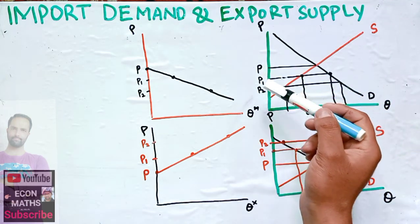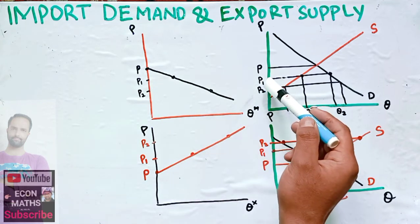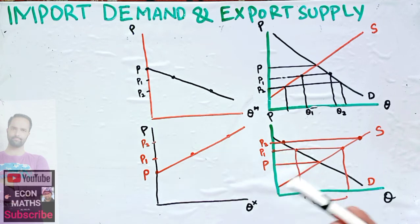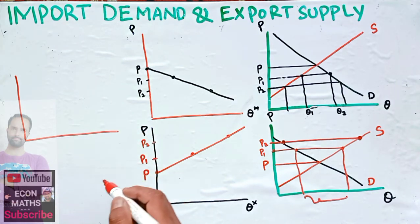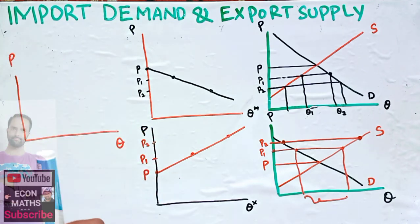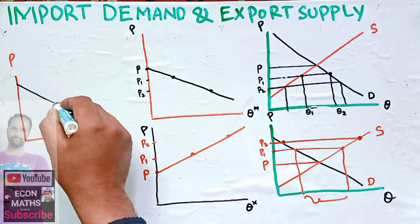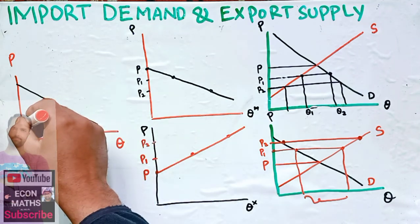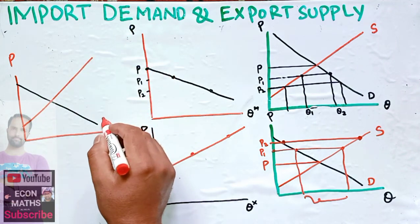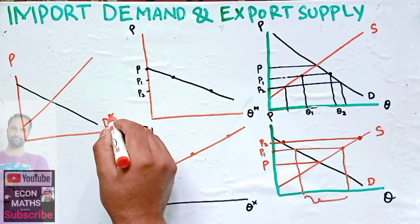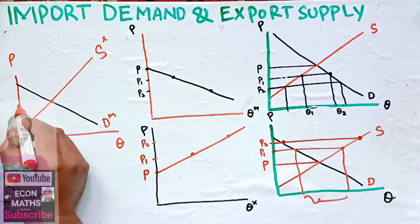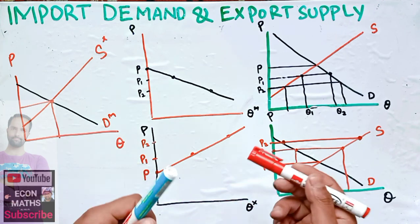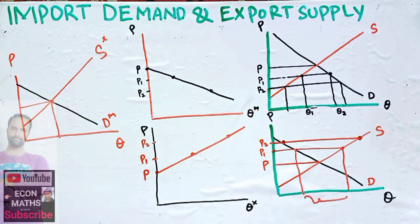When the price is below the autarky price and we join those points, we get the import demand schedule. Now when I combine the two graphs — quantity on one axis and price on the other — I plot both the import demand curve and the export supply curve together. The point where they intersect gives the equilibrium point, which is the world trade equilibrium price.